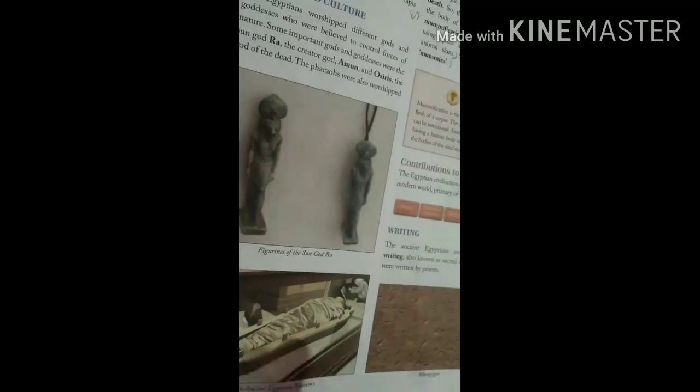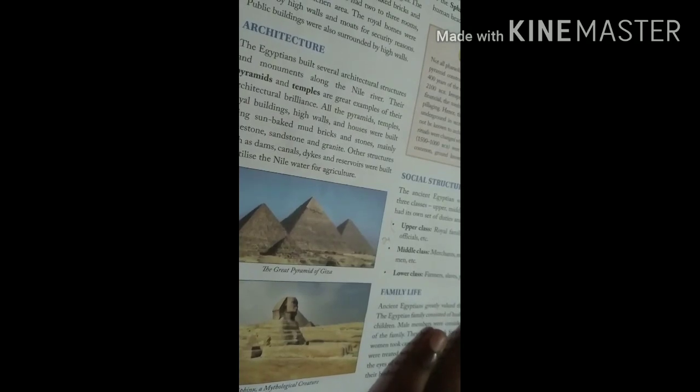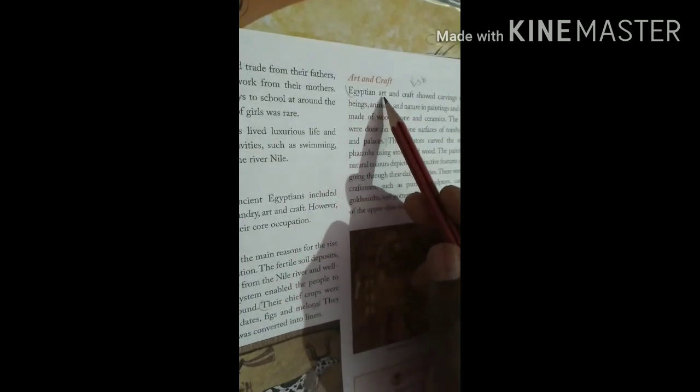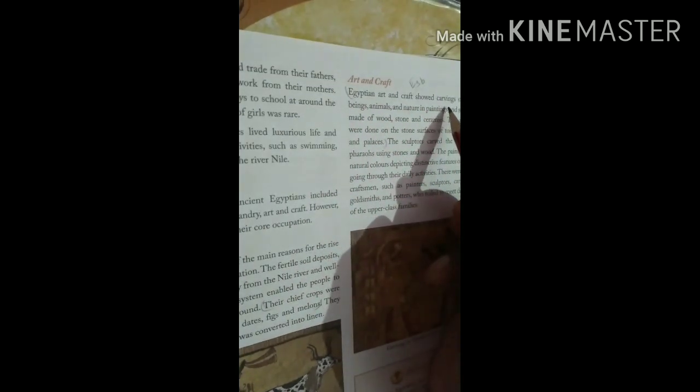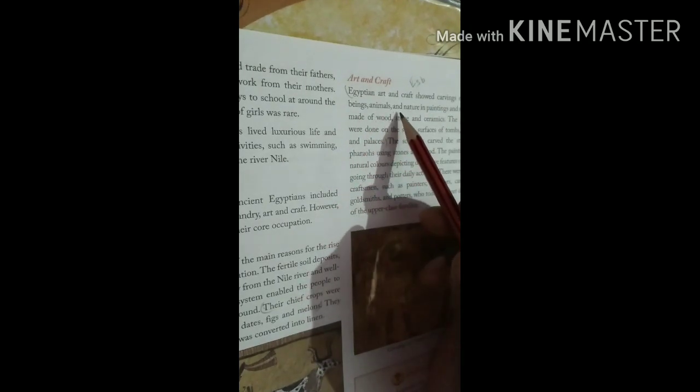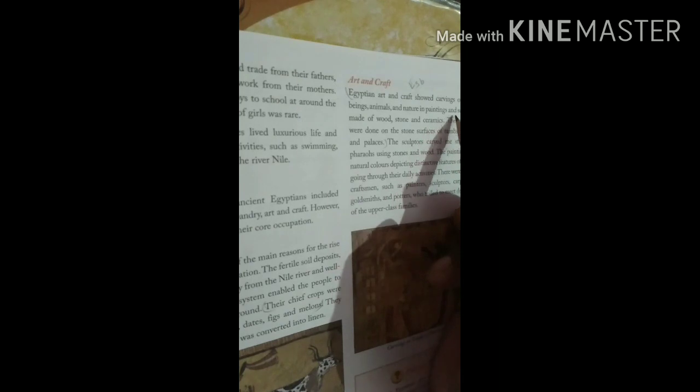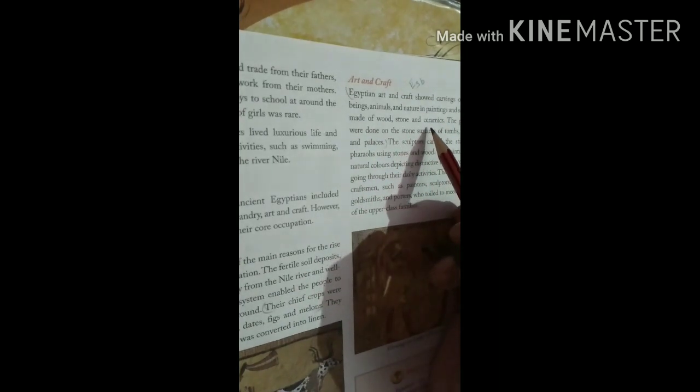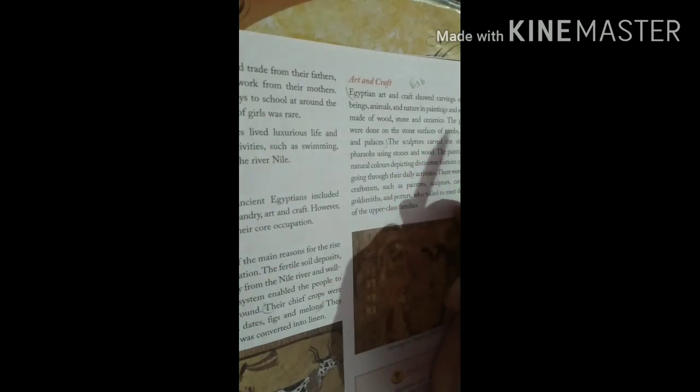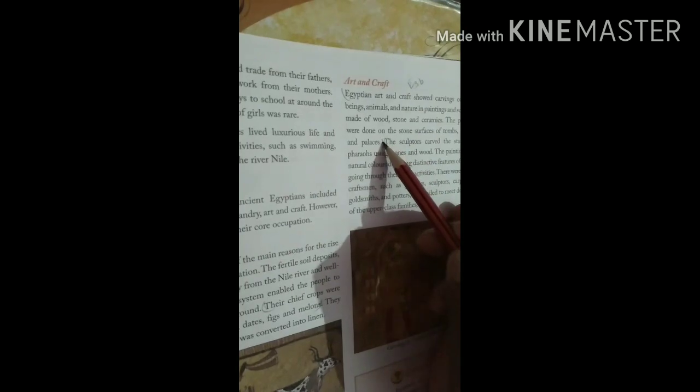Now next, you have to write Arts and Crafts, question third. This is on page number fifteen. Egyptian arts and crafts showed carving of human beings, animals, and nature in paintings and sculptures made of wood, stone, and ceramics. The paintings were done on the stone surface of tombs, temples, and palaces.